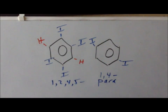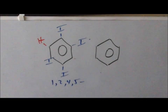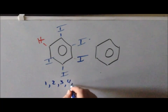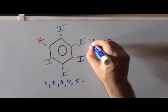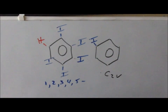We can use this trick one more time. Adding just one more iodine gives us 1,2,3,4,5-pentaiodobenzene. That looks really complicated, but we can swap the hydrogens and iodines, leaving a single iodine — essentially a monosubstituted iodobenzene. Since monosubstituted iodobenzene has the point group C2v, 1,2,3,4,5-pentaiodobenzene also has the point group C2v.